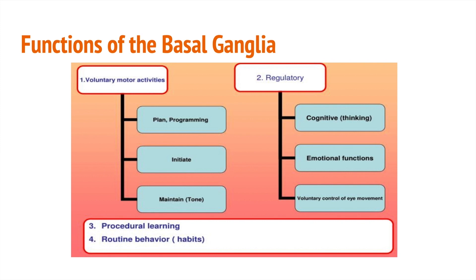We're going to talk about the functions of the basal ganglia. The basal ganglia are a group of structures found deep within the base of the brain — this is where inflammation is occurring in our kids. Basal ganglia are associated with a large variety of functions, including motor control, cognitive coordination, and emotional functions. Subtle abnormalities occur in key brain structures of children diagnosed with PANS.